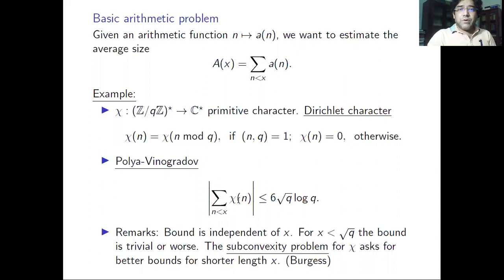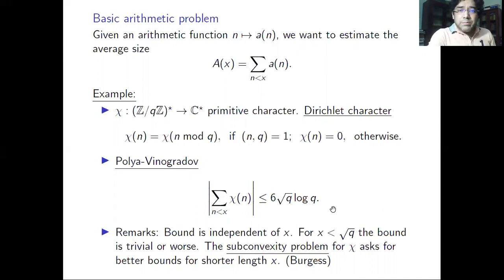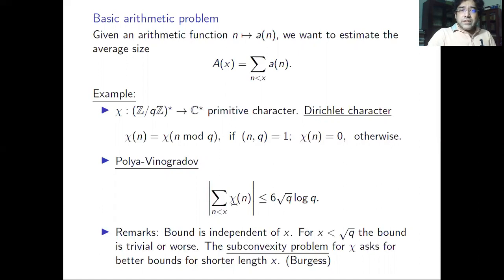If you look at the summatory function for χ(n), there is a well-known result due to Pólya–Vinogradov which says that the sum cannot exceed 6√q log q in absolute value. The bound on the right-hand side is independent of the length x, but if x is smaller than √q the bound is trivial or worse. In the subconvexity problem we encounter short sums where the main challenge is showing cancellation when the length is much shorter than √q.